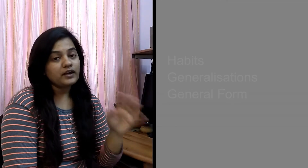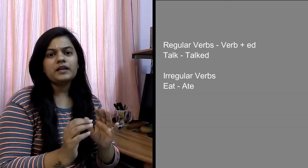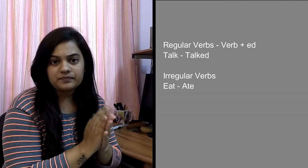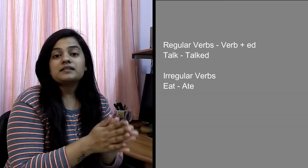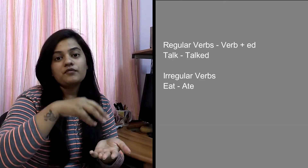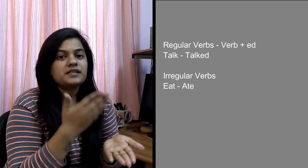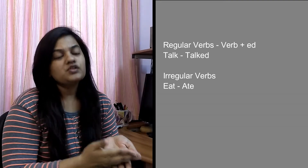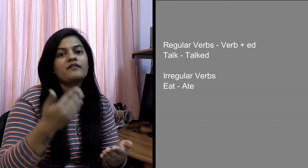There are regular verbs as well as irregular verbs. Regular verbs are those in which you simply add verb plus -ed. That means talk becomes talked. But there are some irregular verbs where the past form of the verb is totally changed. For example, eat becomes ate. You need to remember those words, and it will eventually happen when you have the habit of reading and writing in English.